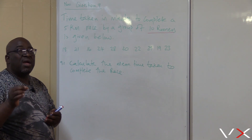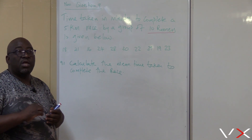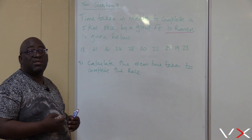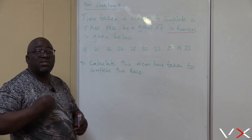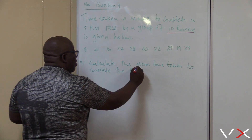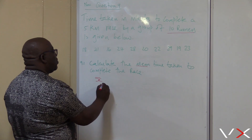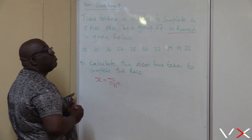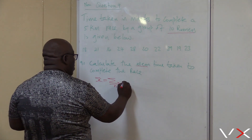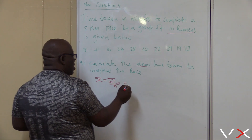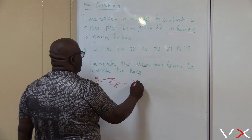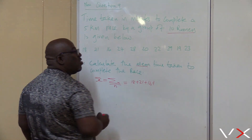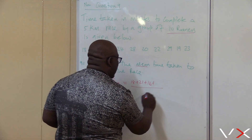Remember what is the mean? Mean is nothing else but the average. We are looking to find the average time taken by this group of 10 runners to complete this race. The symbol for mean or average is X bar. X bar equals the sum of all the observations divided by the number of them. You add 18 plus 21 plus 16 plus 28 and so on, then divide by 10.